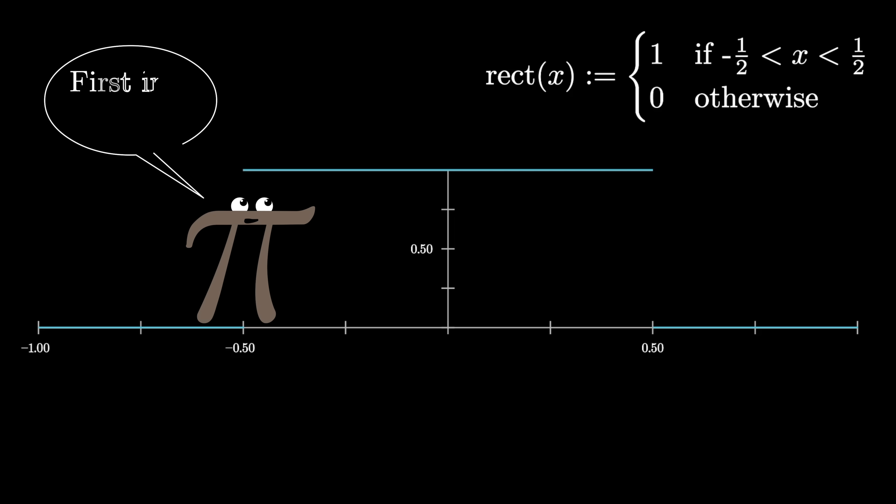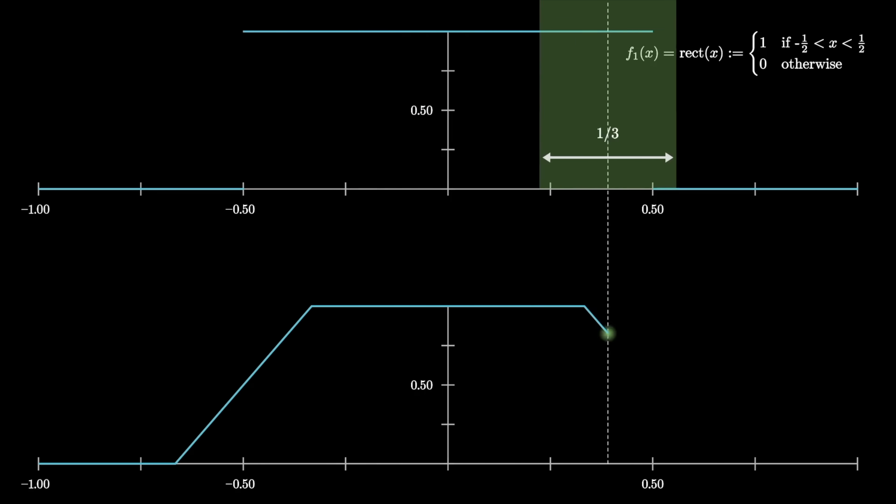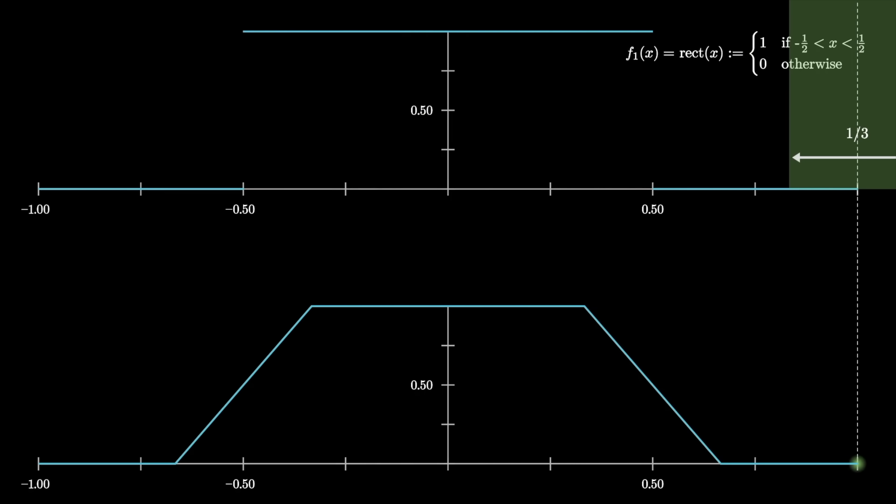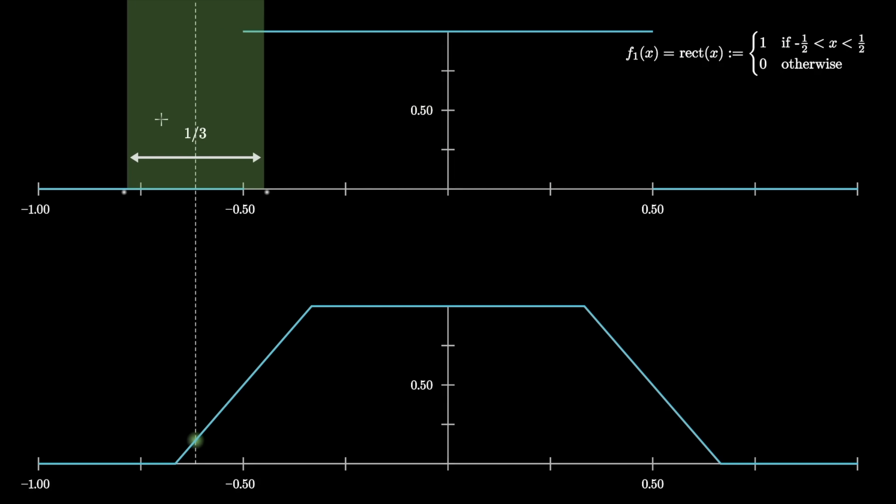This will be the first in a sequence of functions that we define, so I'll call it f1 of x, and each new function in our sequence is going to be a kind of moving average of the previous function. So for example, the way this second iteration will be defined is to take this sliding window, whose width is 1 third, and for a particular input x, when the window is centered at that input x, the value in my new function drawn below is defined to be equal to the average value of the first function above inside that window.